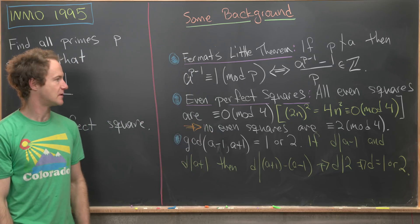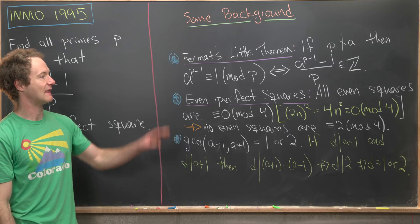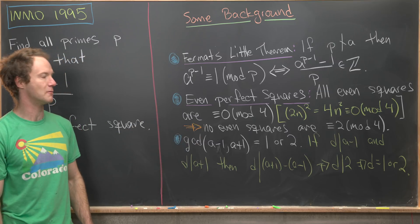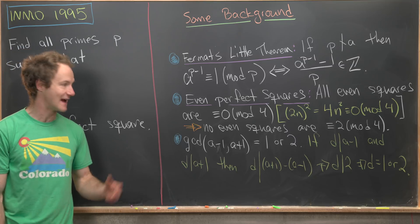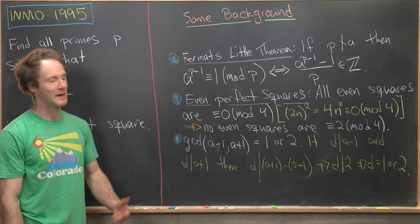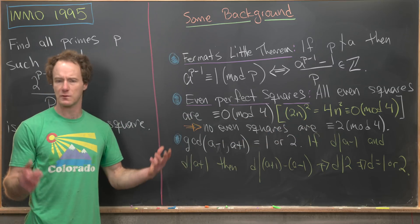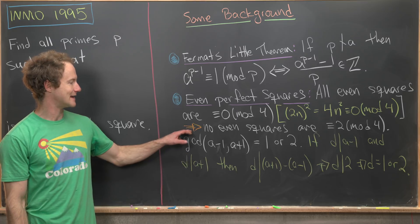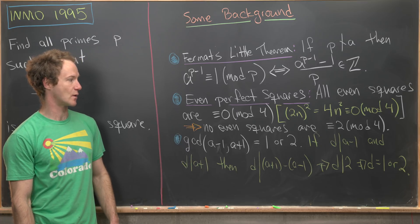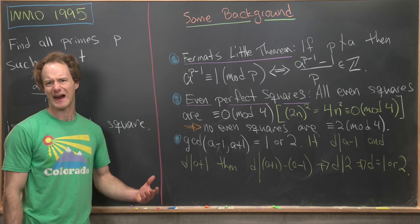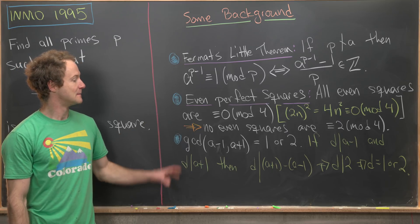So that means the cases over here will be the cases when p is not equal to 2. But you can check that if p equals 2, this doesn't really work in the first place. Next, we're going to talk about even perfect squares. All even perfect squares are congruent to 0 mod 4. In other words, when we divide them by 4, we get a remainder of 0. That's because if we square an even number, we get a multiple of 4, which is pretty clear. But that implies that no even squares are congruent to 2 mod 4. This is an important fact we'll use in our solution.